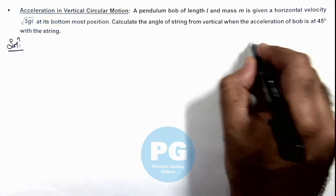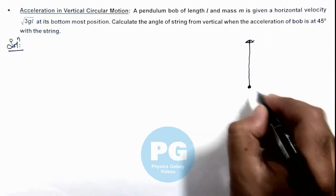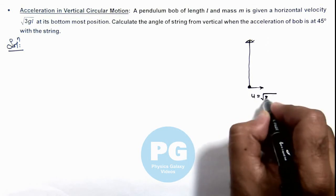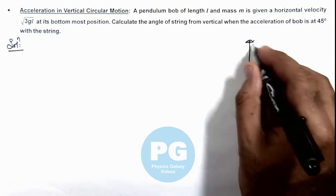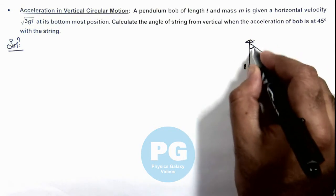In this situation if we draw the picture, this is the simple pendulum. At the bottom most point if it is imparted with the initial speed u = √(3gl), then it'll start moving in this direction in a circular path of radius l.